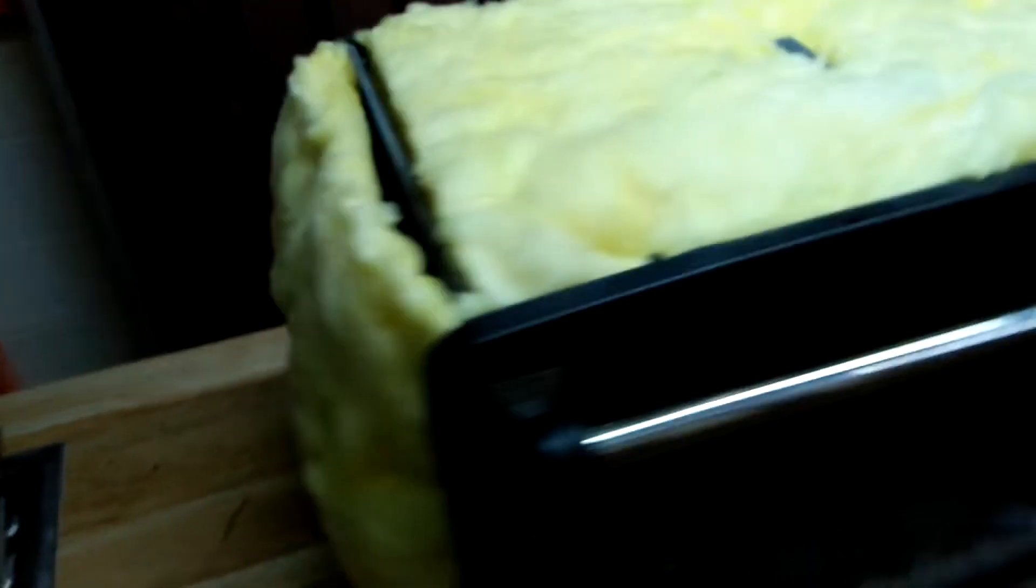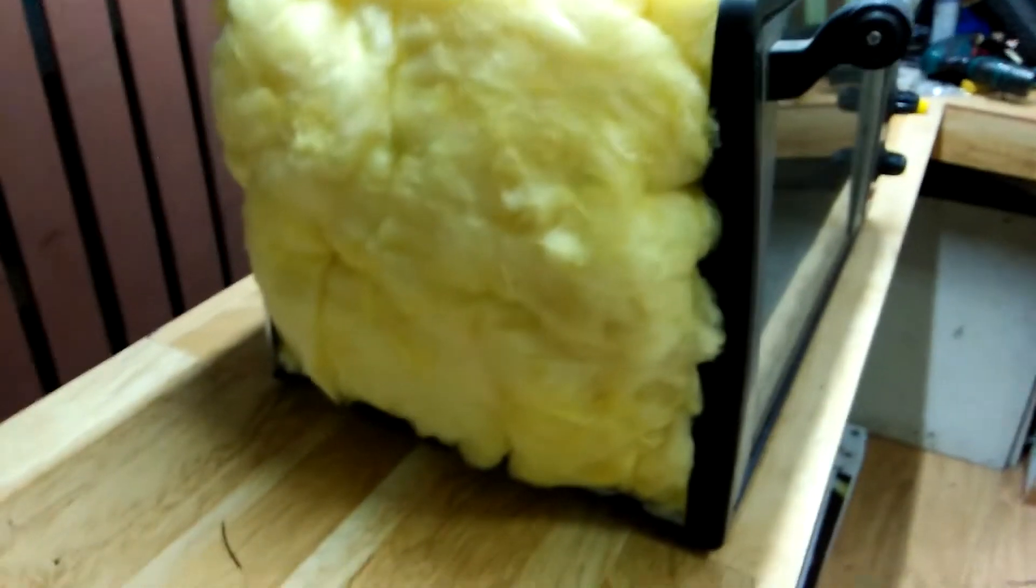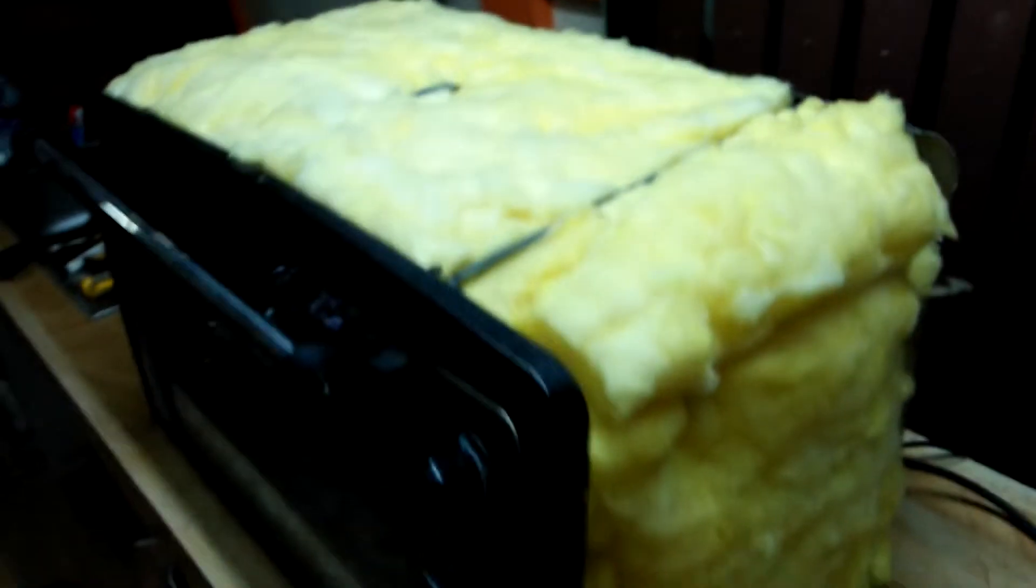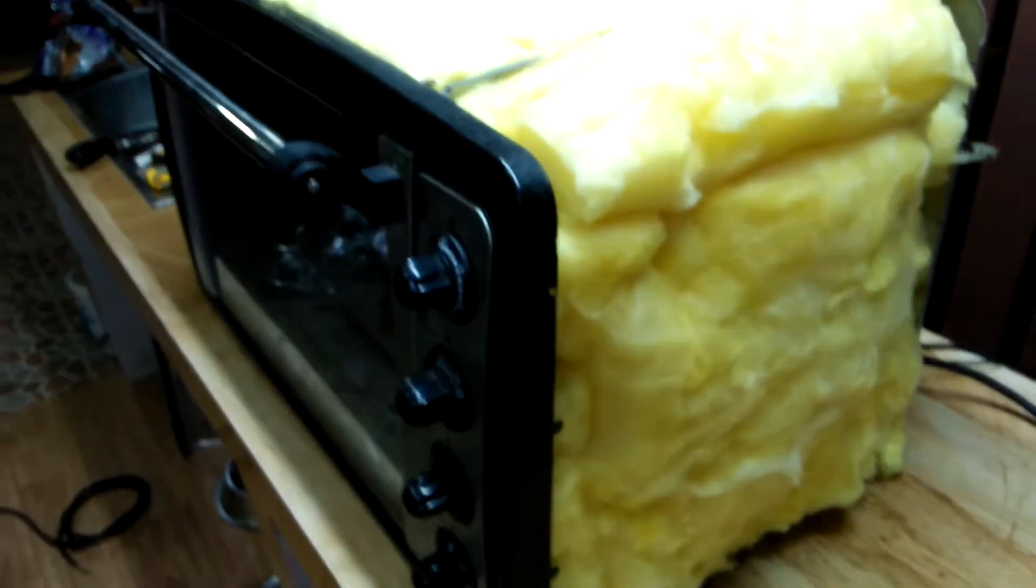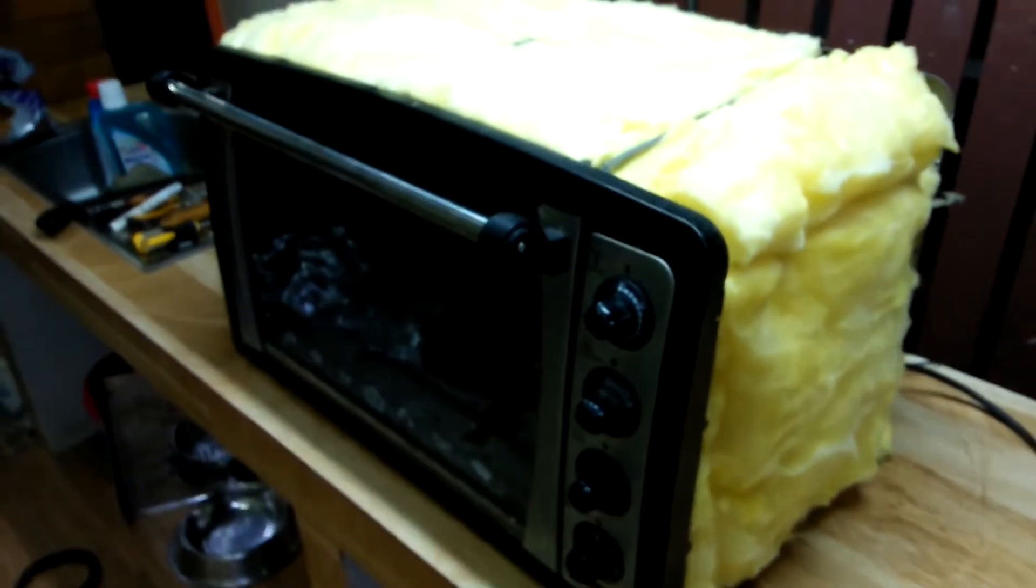As you can see here, I stuff as much fiberglass insulation as I can into the top and side walls. The fiberglass insulation prevents air circulation between the walls of the oven that could contribute to heat loss through convection.